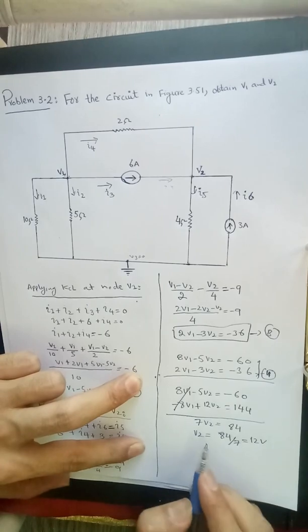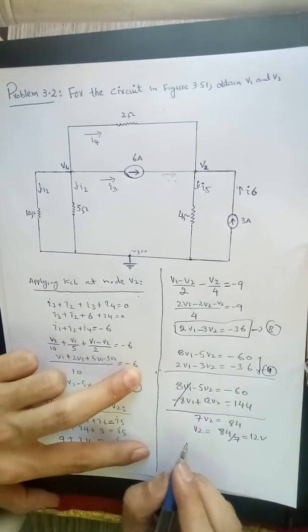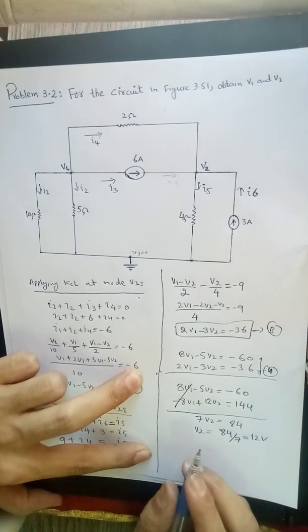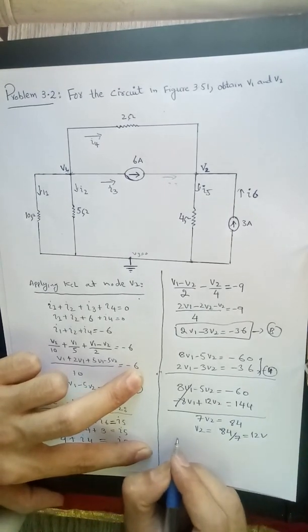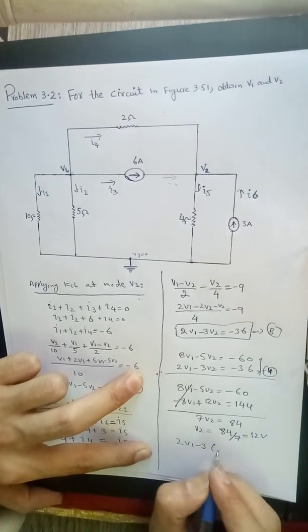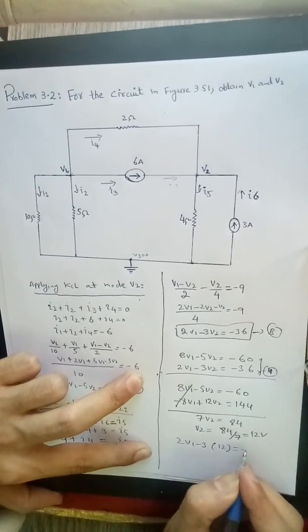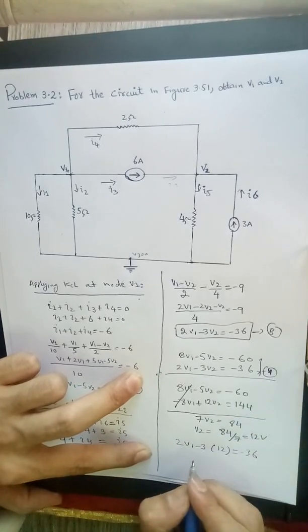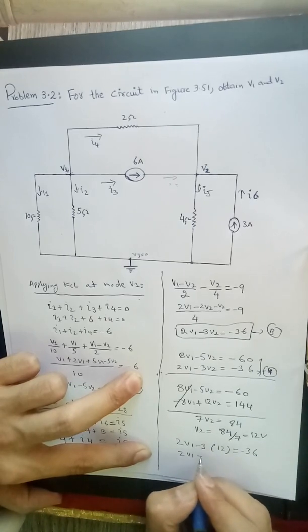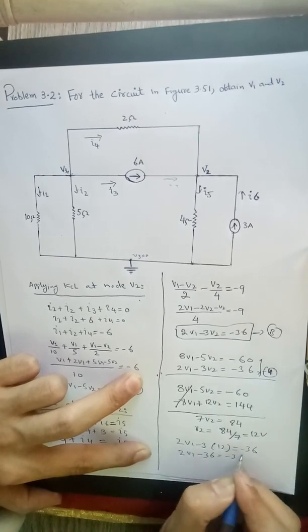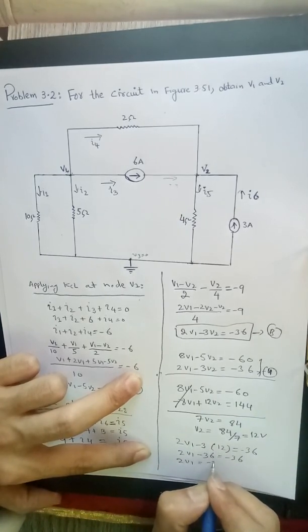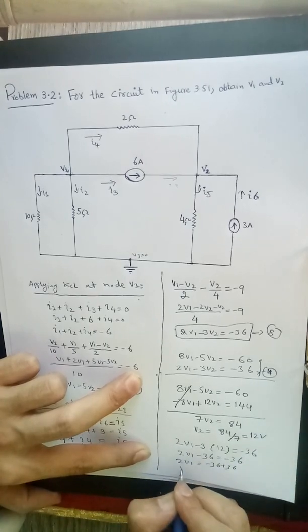After putting V2 in any of these two equations you can get the value. So put this in equation A or equation B. So 2V1 minus 3 times V2 which is 12 equals minus 36. V1 is also 12V.